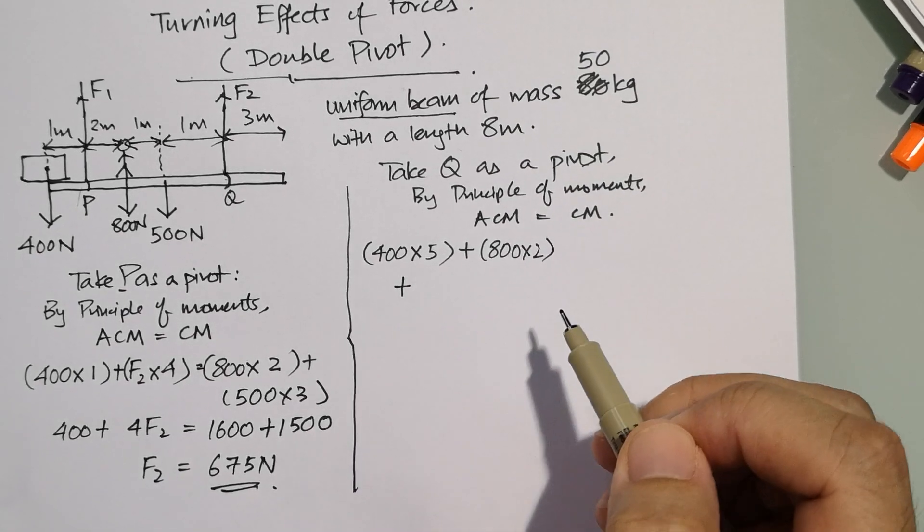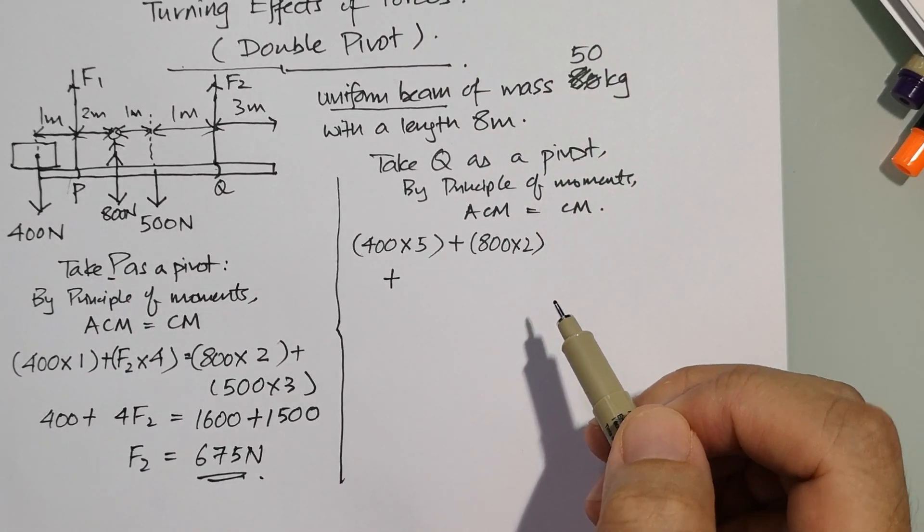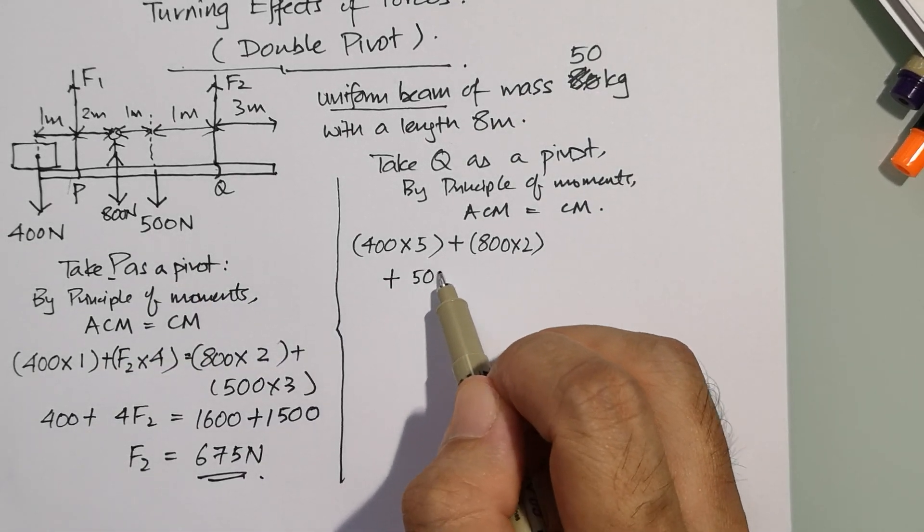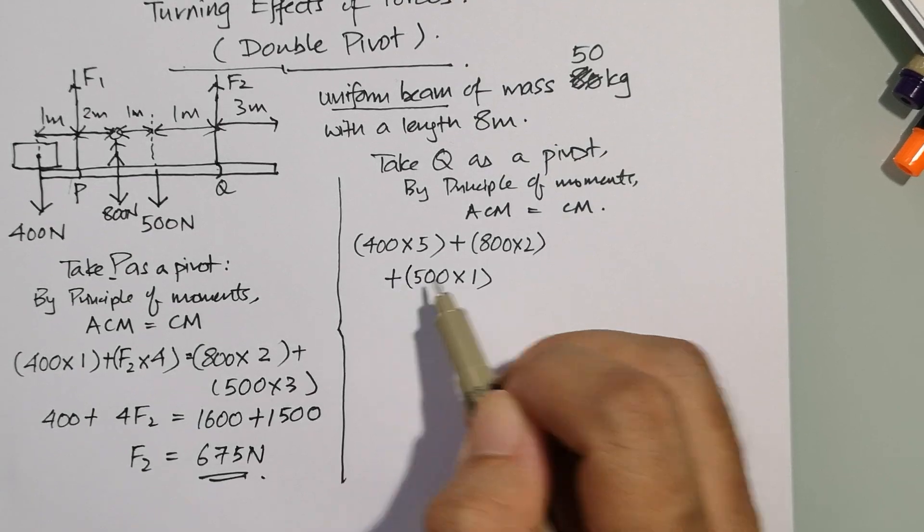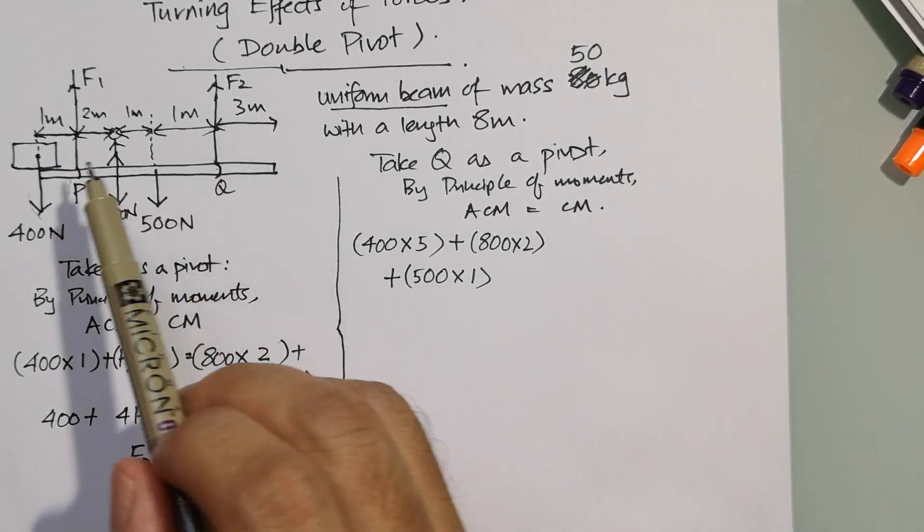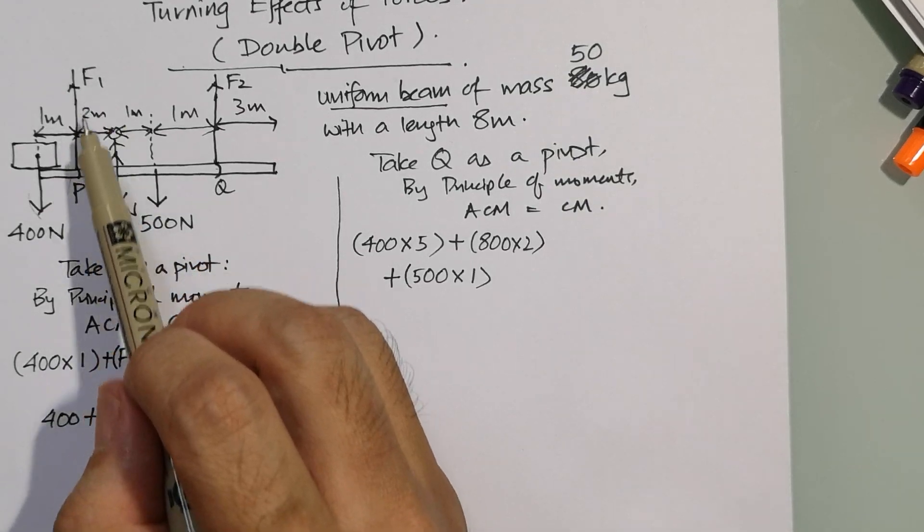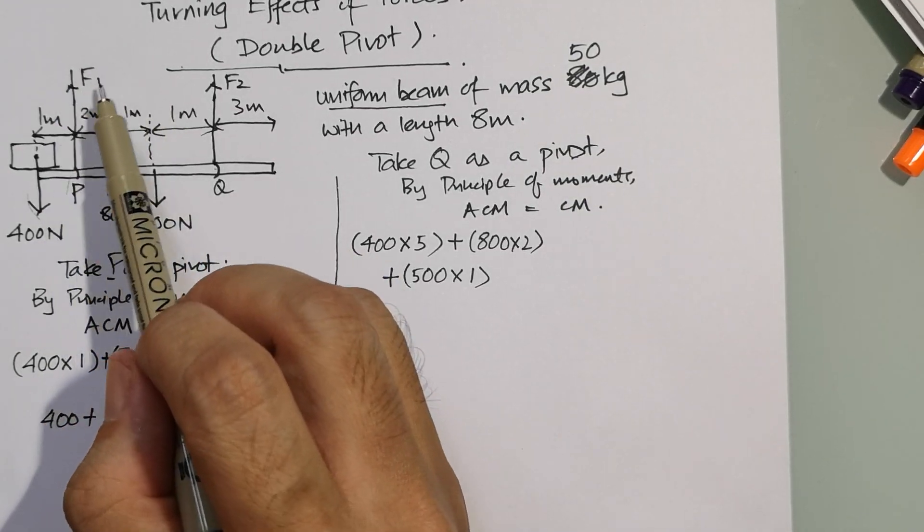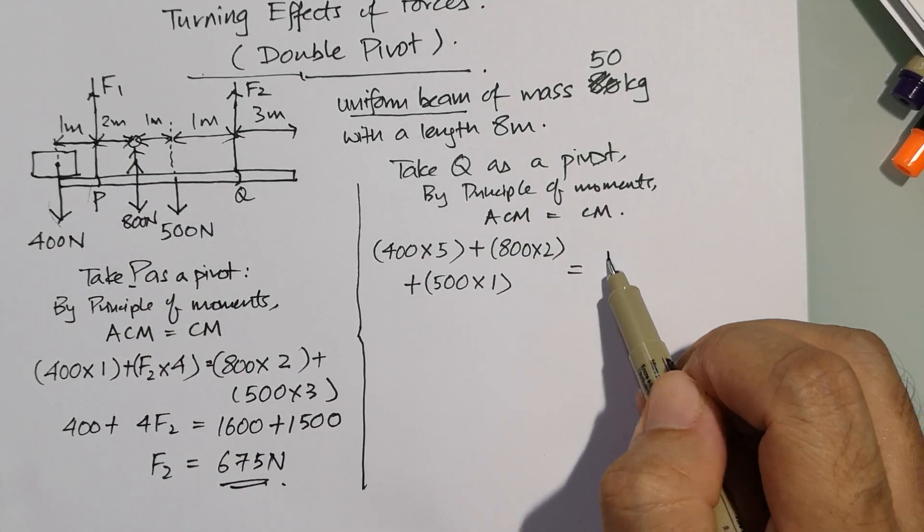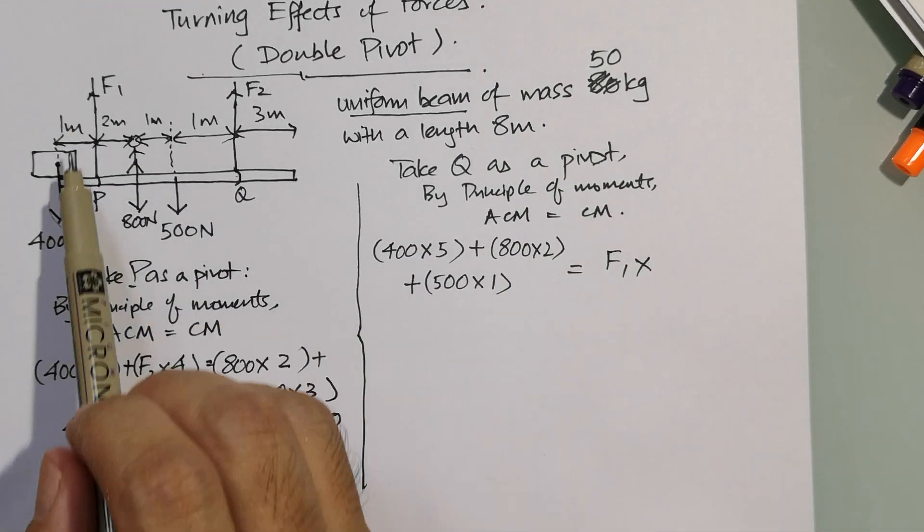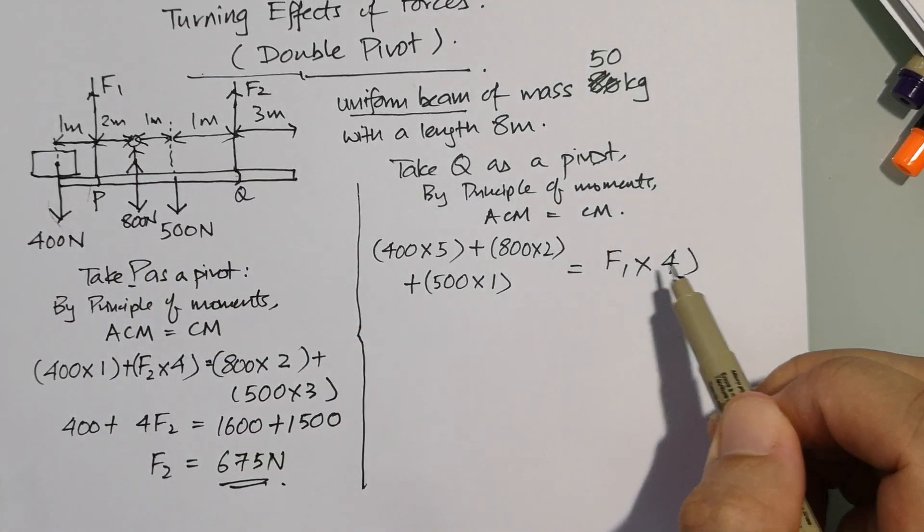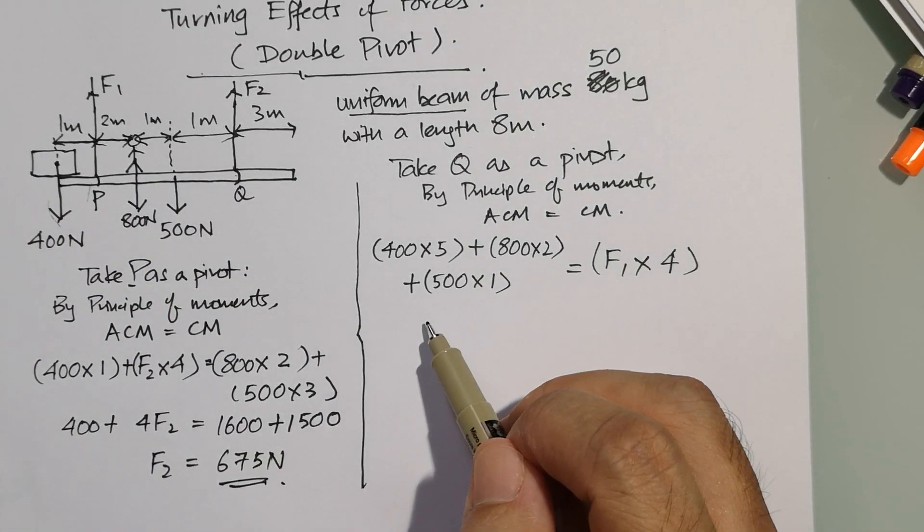These are all the anti-clockwise moments. This one here, F1, will be the clockwise moment. So it goes to F1 times—let's see what's the length now—2 plus 1 plus 1 plus 1: 4. Let's work that out.